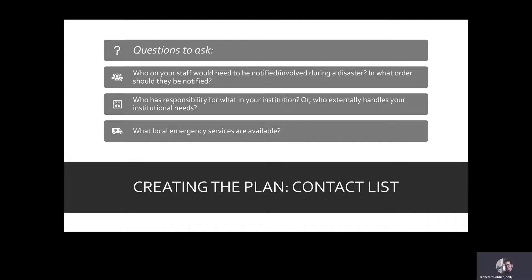While creating the contact list, ask yourself some questions. Who on your staff would need to be notified during a disaster? Who would need to be involved in a disaster response, and in what order should they be notified? Look at who has responsibility for what in your institution — who handles collections, building issues, computer and IT? Do you have utilities, vendors, or external contractors who handle these issues for you? Be aware of what local emergency services are available and add them to the contact list, though the number for an immediate active emergency like fire or a medical problem would be 911.